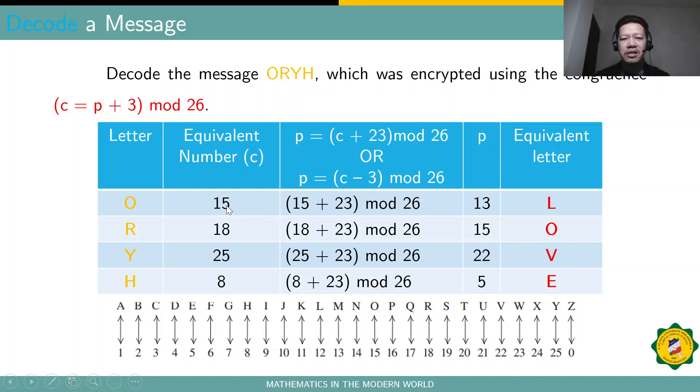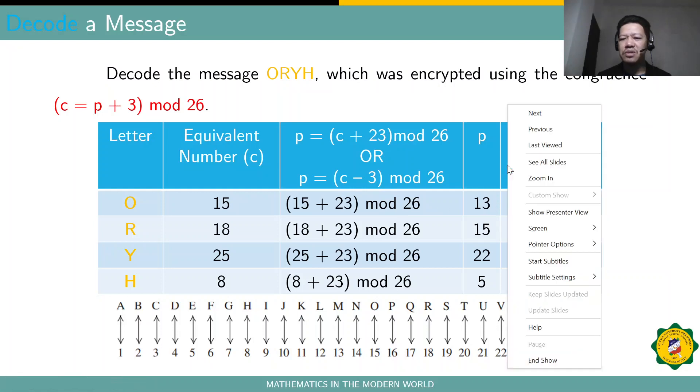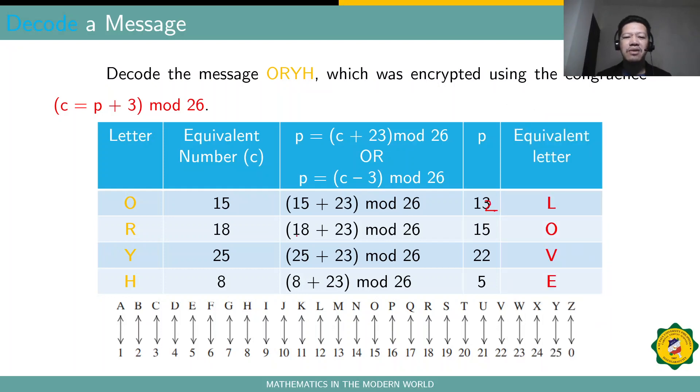So, substituting the value of C here in the formula. So, you have 15 plus 23 modulo 26. If you add this, this is 38. 38 modulo 26 is actually 12. So, this should be 12 because that's 38 minus 26 is actually 12. And then, we have 18 plus 23. That's actually 41 modulo 26. It's 15. That's the remainder, isn't it? If you divide 41 by 26, 25 plus 23 is 48 modulo 26, the remainder is 22. 8 plus 23 modulo 26, that's actually 31 modulo 26, the remainder is 5. Those numbers are the values of P.